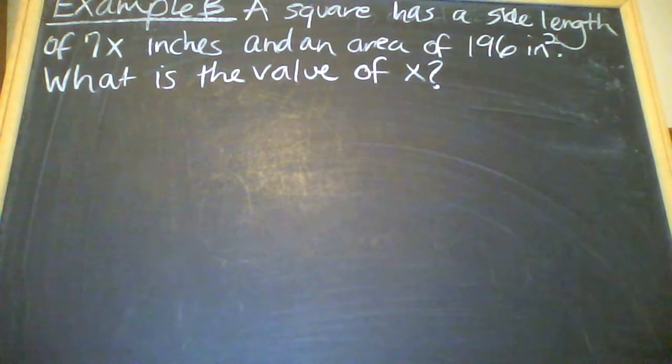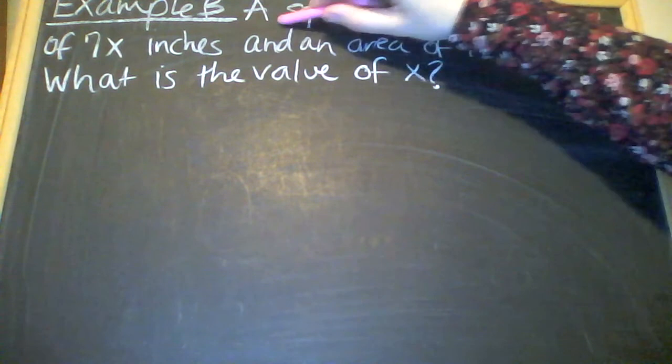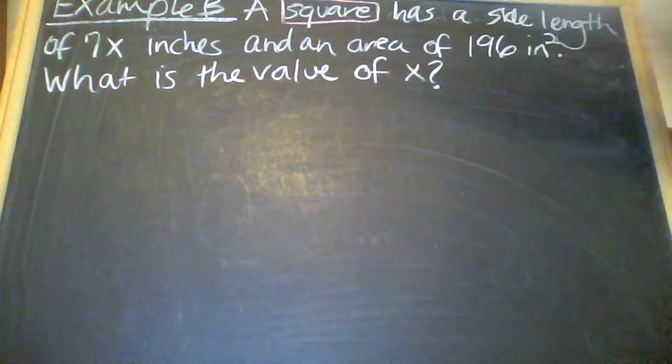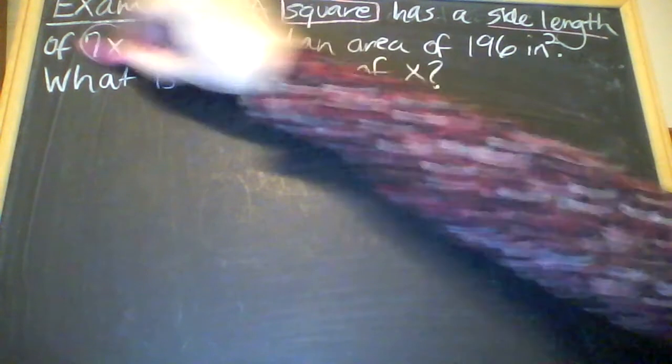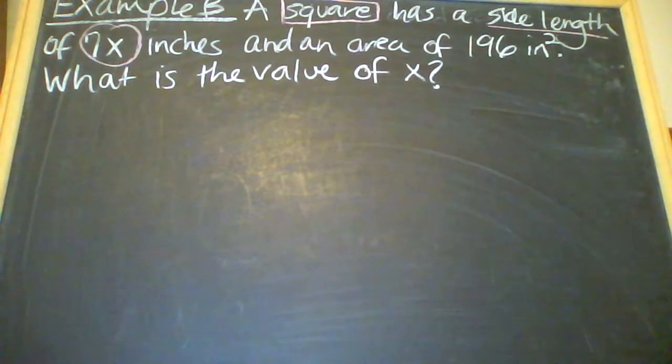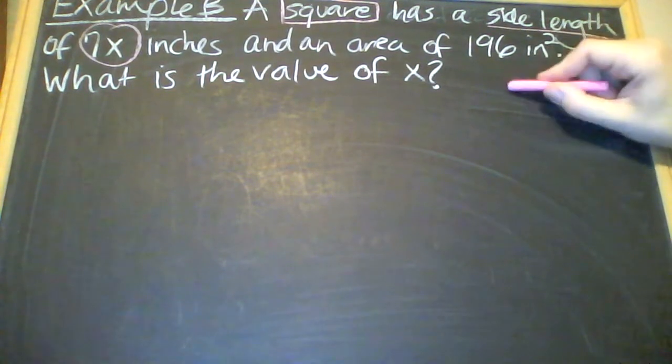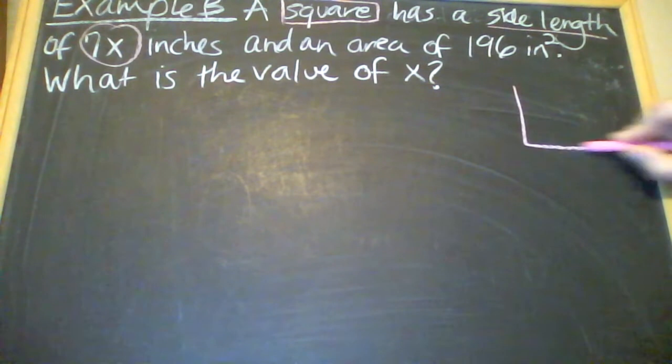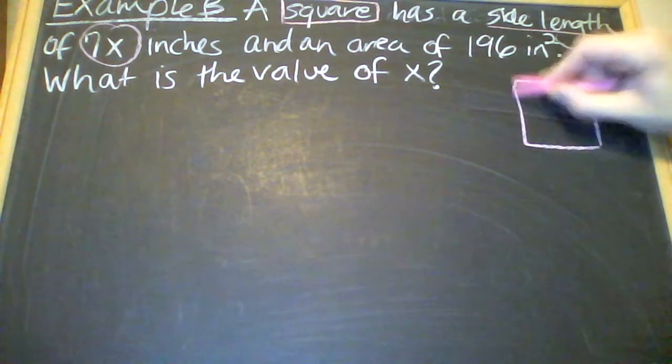So this is similar to the last question. You're given a square. You're given it has side lengths of 7x inches. So I'm going to start by drawing a square and labeling its sides as 7x.